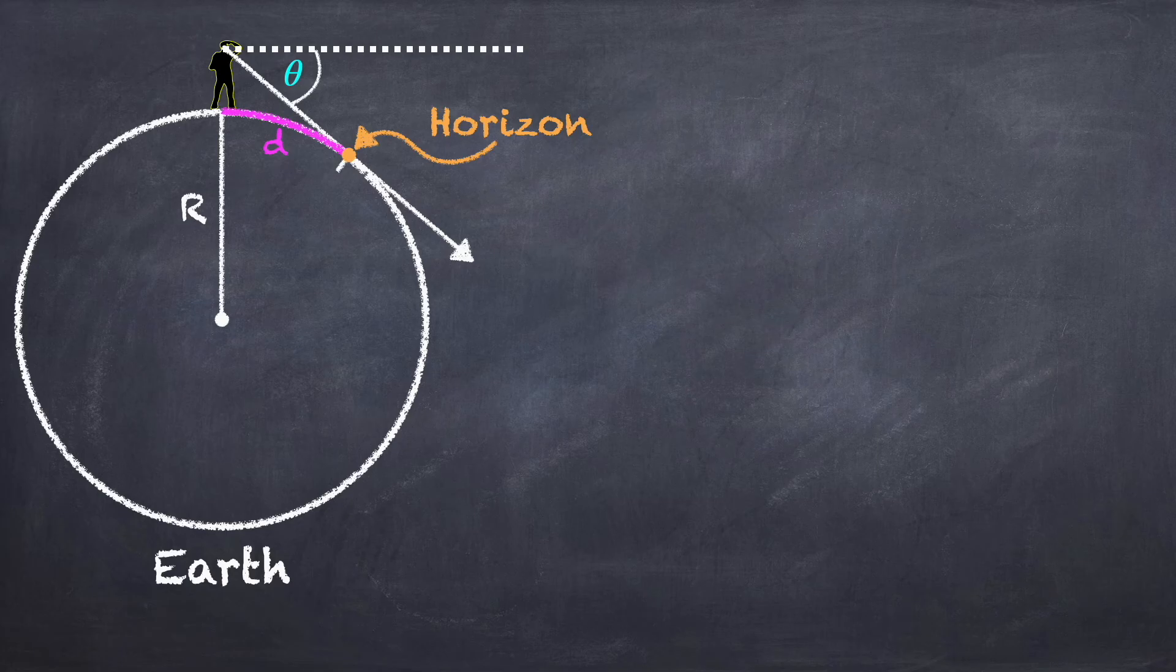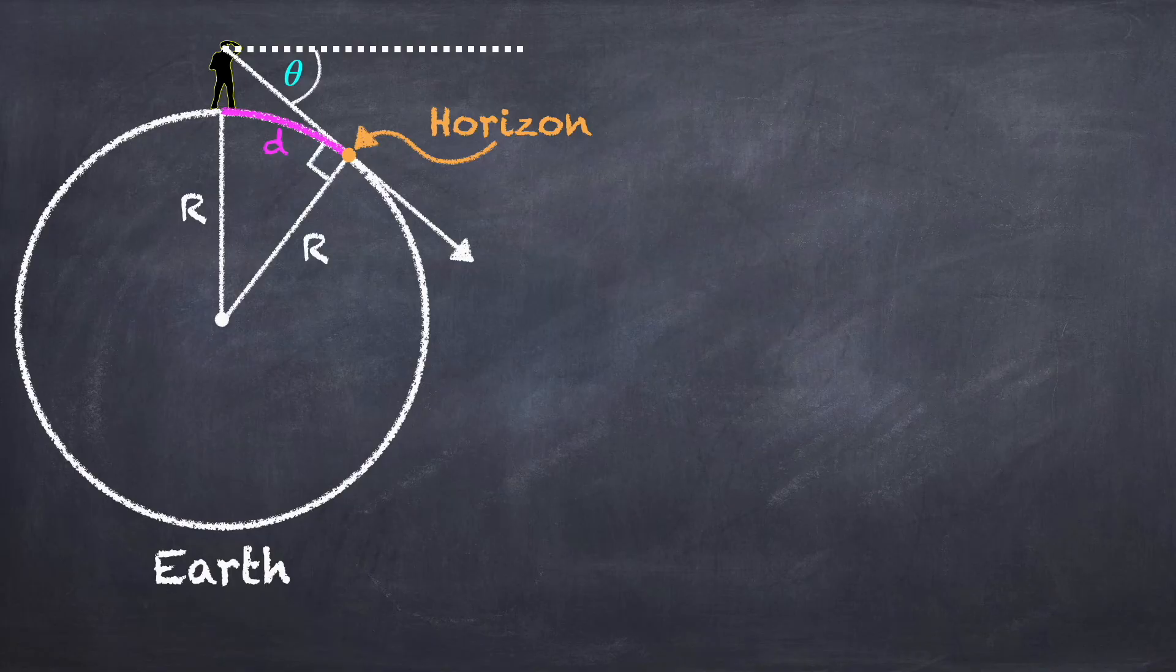I'm now going to draw a line from the horizon to the center of the Earth. And this line will also have a length r, and it will be perpendicular to the line of sight.